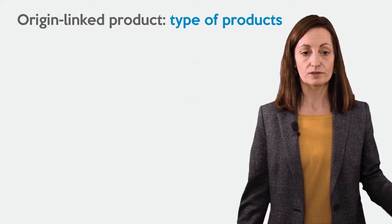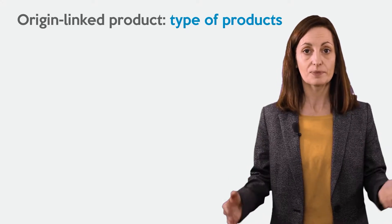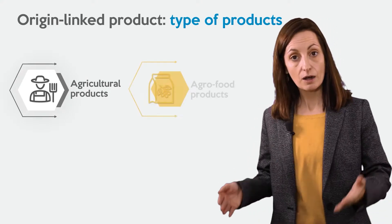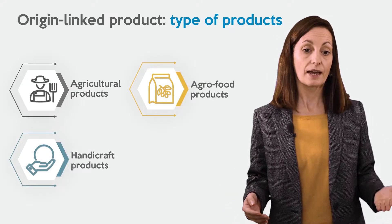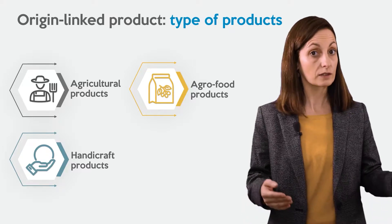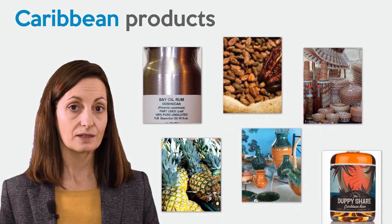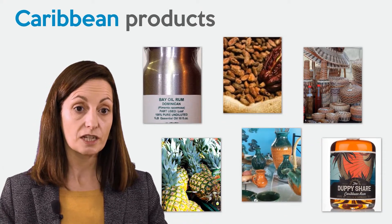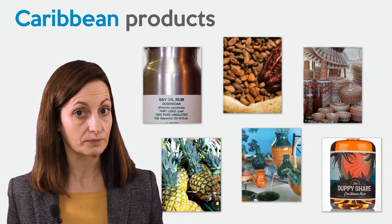As we said just before, there are several types of product. We have the agricultural product, agro-food product, handicraft products, and also industrial or mine products. In this slide, you can see some different types of products that originate from the Caribbean region.